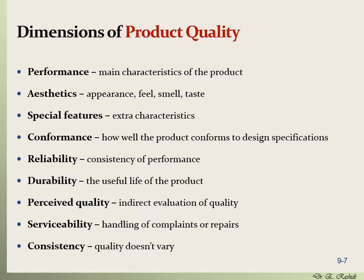The next is consistency — quality should not vary between the product or between its performances. If you purchase a product and it's good quality and you like it, and you want to purchase one for your dad, mom, sister, or brother, you would expect to have the same quality. So it has to be consistent. These are the dimensions of product quality.